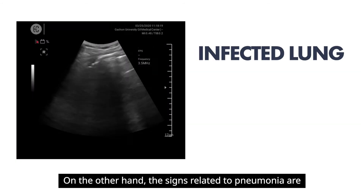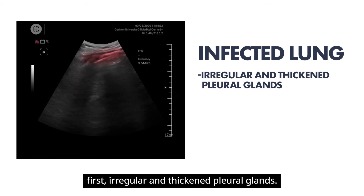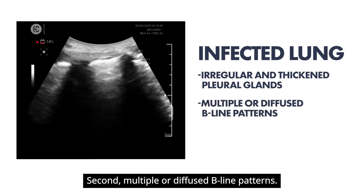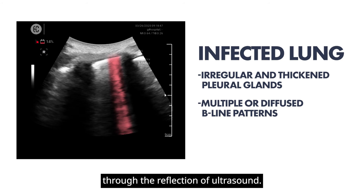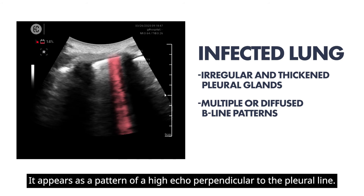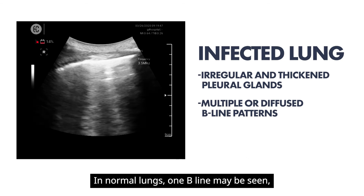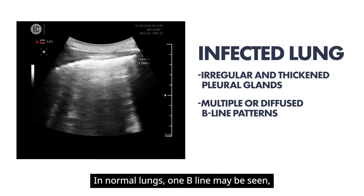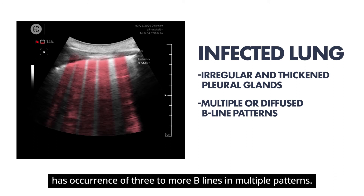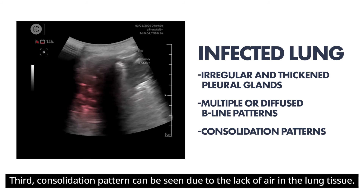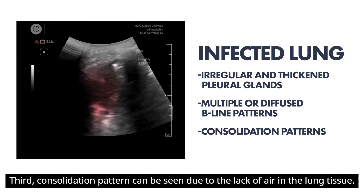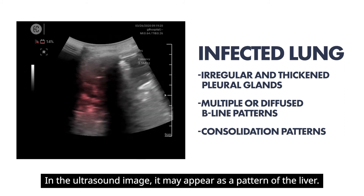The signs related to pneumonia are: first, irregular and thickened pleural glands. Second, multiple or diffused beeline patterns. Beeline is an artifact generated by the presence of fluid in the interlobular septum through the reflection of ultrasound. It appears as a pattern of high echo perpendicular to the pleural line. In normal lungs, one beeline may be seen, but a lung with pneumonia has occurrence of three or more beelines in multiple patterns. Third, a consolidation pattern can be seen due to the lack of air in the lung tissue. In the ultrasound image, it may appear as a pattern of the liver.